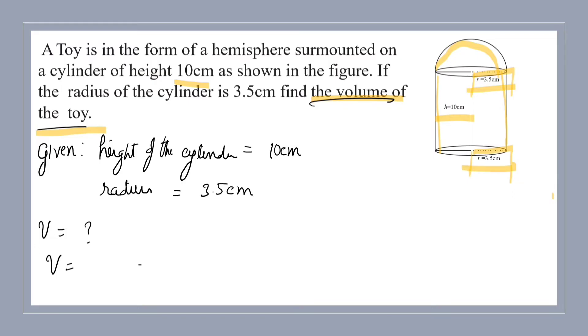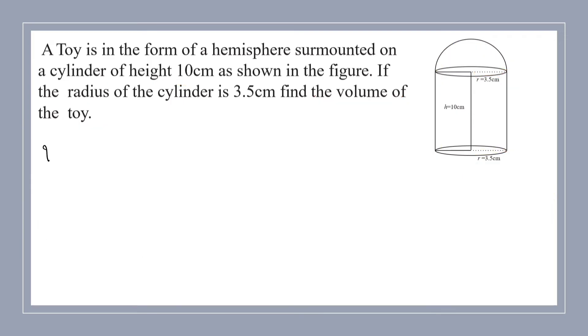Volume of the toy is equal to volume of hemisphere plus volume of cylinder. We know that volume of hemisphere is 2/3 pi r³. Volume of cylinder is pi r² h.